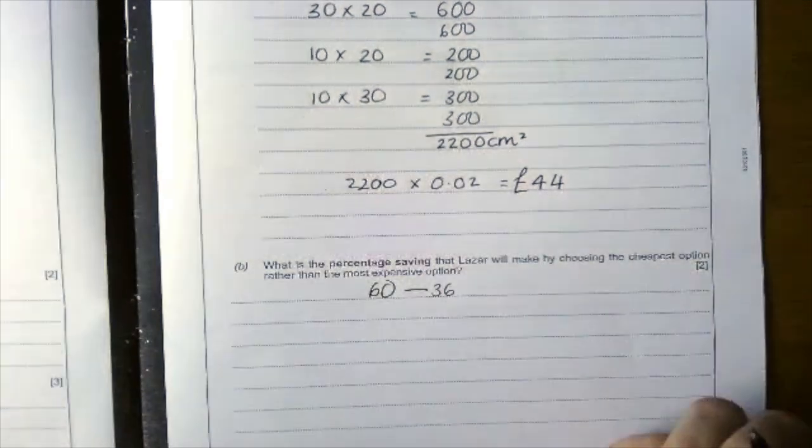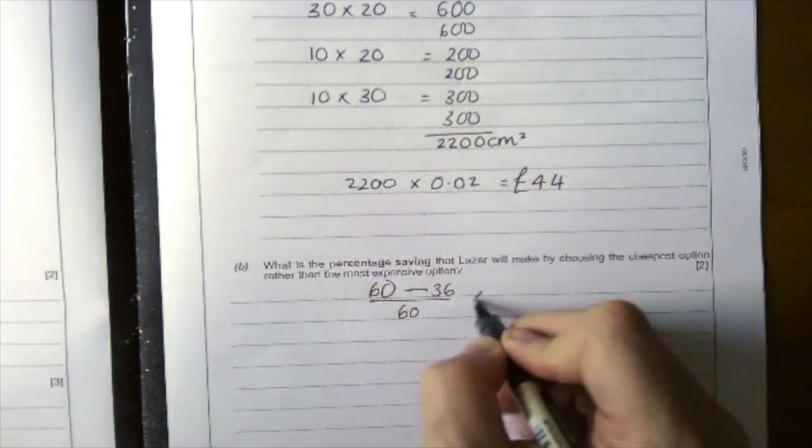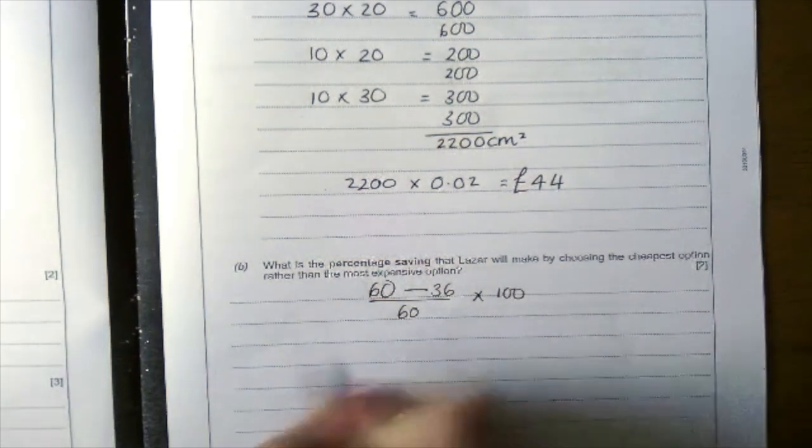So basically you do the difference between them divided by the most expensive, and then you turn it into a percentage times by 100.